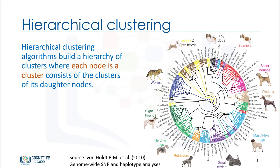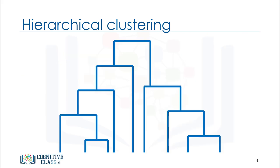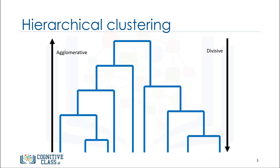Hierarchical clustering algorithms build a hierarchy of clusters where each node is a cluster consisting of the clusters of its daughter nodes. Strategies for hierarchical clustering generally fall into two types: divisive and agglomerative.